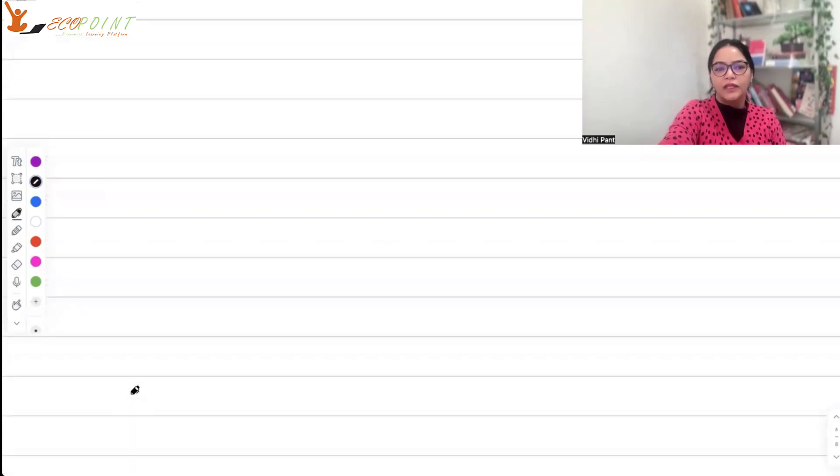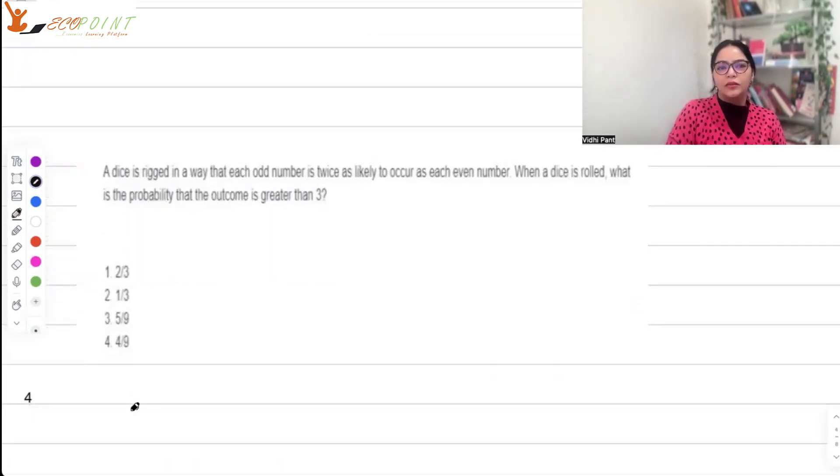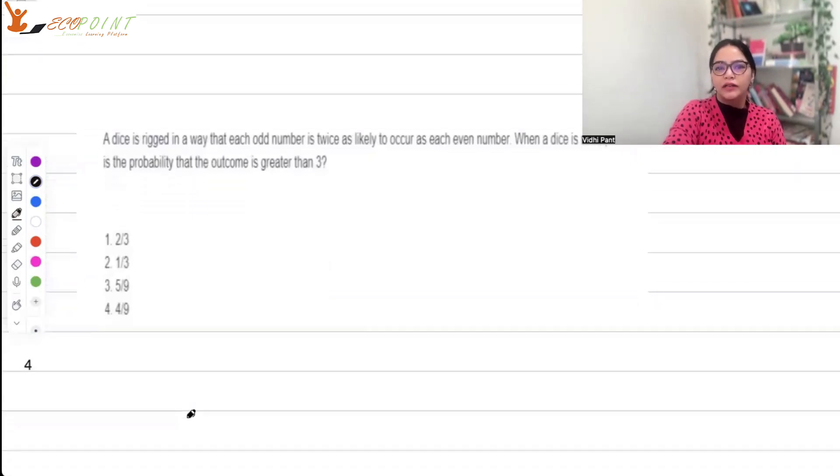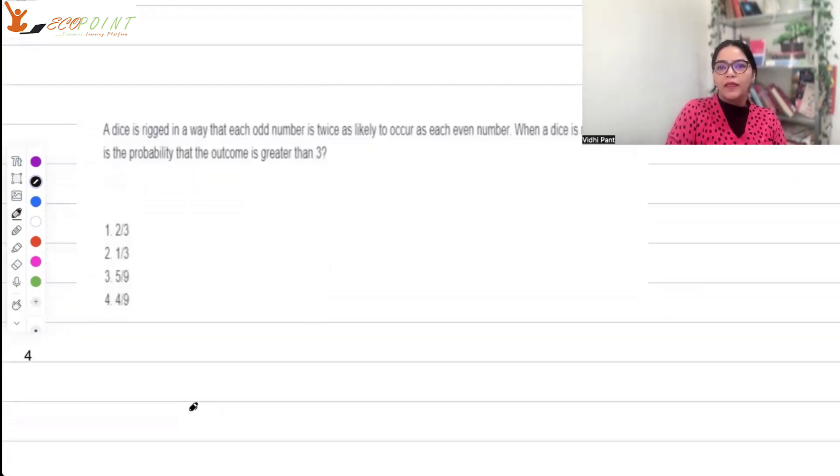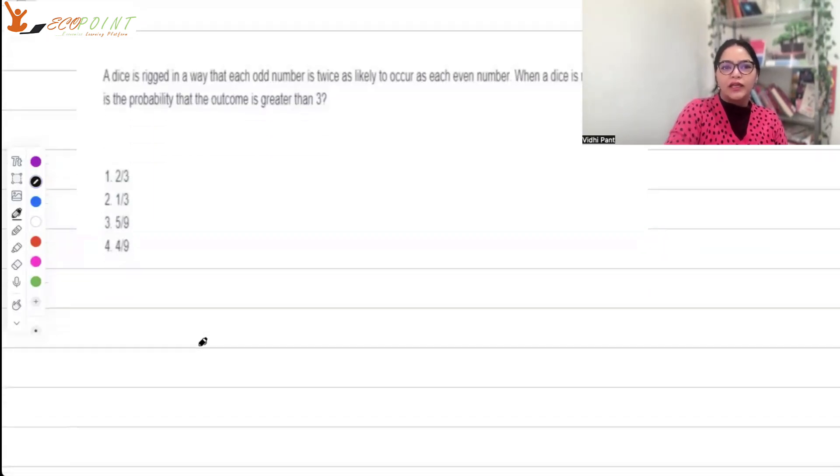Next question: A dice is rigged so that each odd number is twice as likely to occur as each even number. When the dice is rolled, what is the probability the outcome is more than 2? What values can X take? It's a dice, so 1, 2, 3, 4, 5, 6.